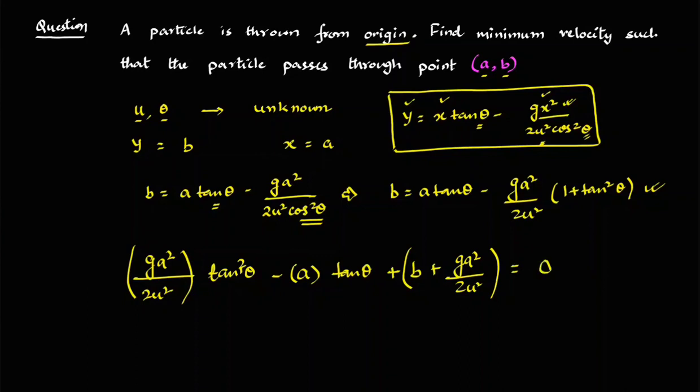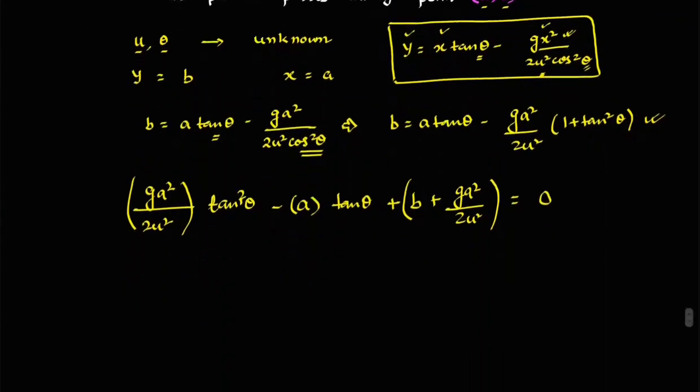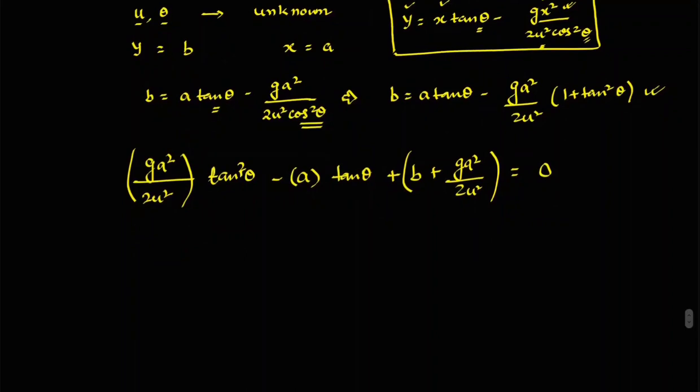And if a quadratic equation is zero and we know that if there are real roots because it is passing through A comma B. So obviously this quadratic has a real root. So discriminant of this quadratic equation will be greater than or equal to zero because the quadratic equation is passing through a certain point.